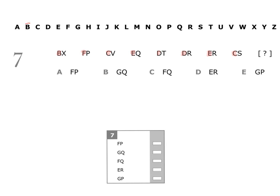We start with B and F. To get from B to F, we need to move on four letters. Then we have the letter C. To get from F to C, we need to move back three letters.